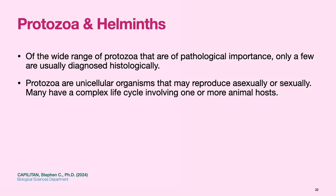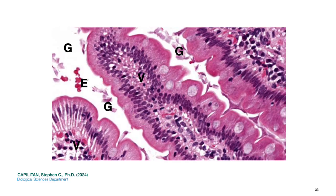Lastly, protozoa and helminths. Of the wide range of protozoa of pathological importance, only a few are usually diagnosed histologically. Protozoa are unicellular organisms that may reproduce asexually or sexually; many have a complex life cycle involving one or more animal hosts. This is giardiasis at high power. Giardia lamblia is a common protozoan parasite which causes diarrhea; the organism is spread via contaminated water and is more common in institutionalized and immunocompromised patients. Diagnosis is commonly made by biopsy of the small intestine, where Giardia organisms labeled G are seen on the surface of the villi labeled V.